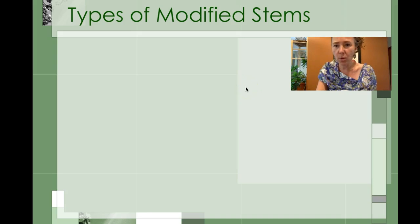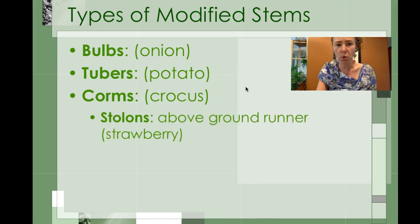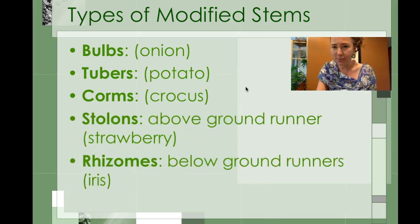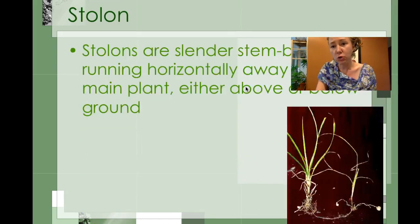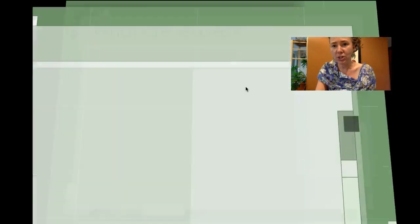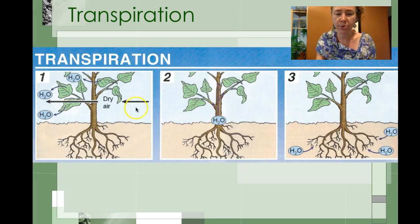We will be learning quite a bit about different modified stems such as bulbs, tubers, corms, stolons, and rhizomes this week, and also a little bit more about the process of transpiration, which is removing water and those valuable nutrients that they carry throughout the plant and also making sure that plants get the nutrients that they need throughout. More on that to come.